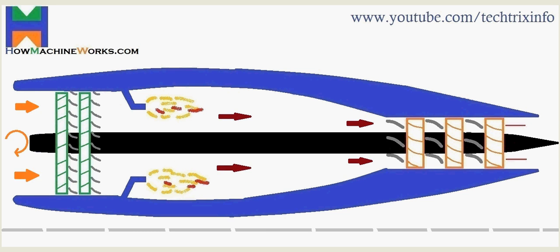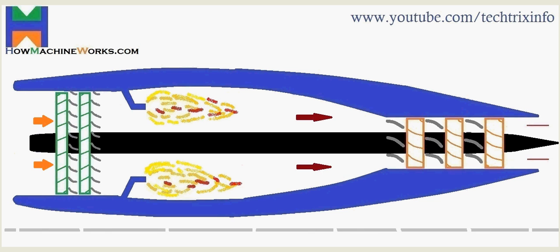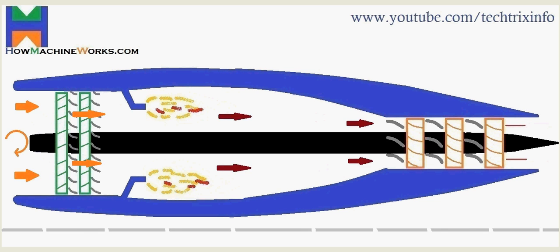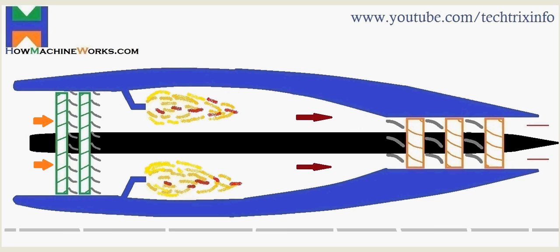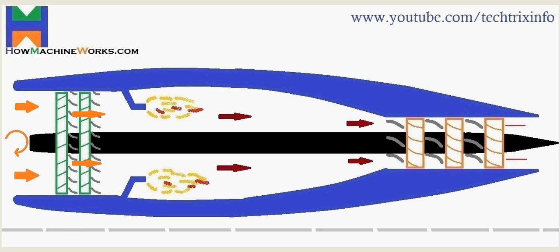So the function of the compressor blade is to suck the air from the atmosphere, compress it and give it towards the engine. So what happens is that the volumetric efficiency of the engine increases. So that's the function of the compressor blades.